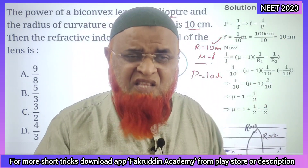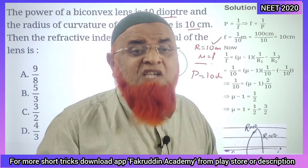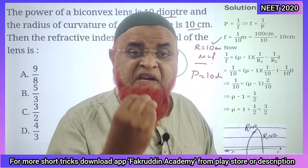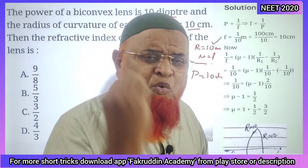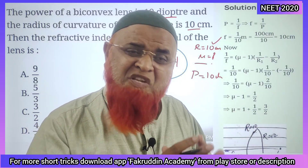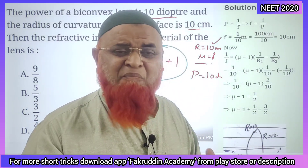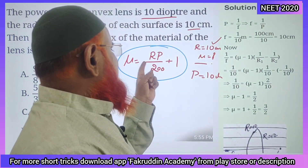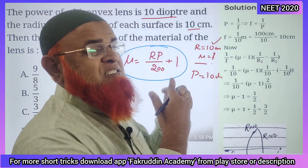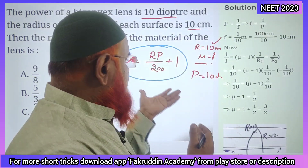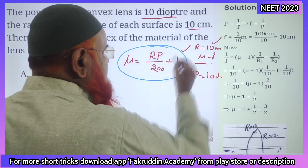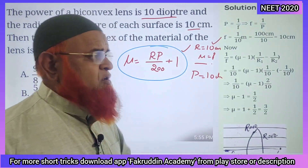But as you are a repeater, you have very less time in JEE Mains and NEET. You can solve this by using a simple shortcut formula which is easy to remember: refractive index μ = (R × P) / 200 + 1. This simple formula can help you solve the problem in just a single step.